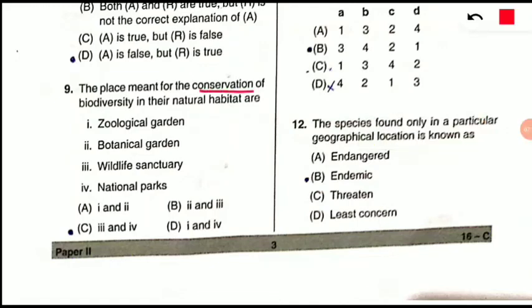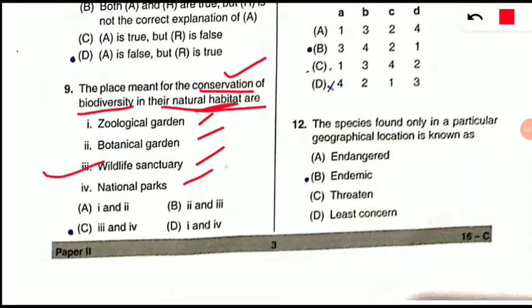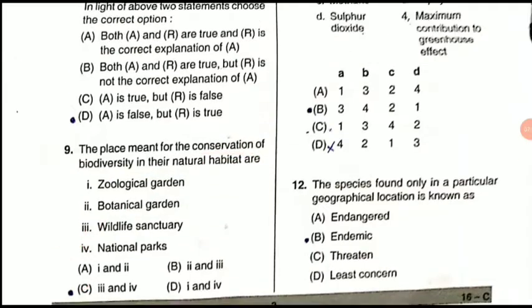Question 9: The places meant for conservation of biodiversity in the natural habitat are what? Options are zoological garden, botanical garden, wildlife sanctuary, and national parks. This asks about in-situ conservation — in the natural habitat. In-situ conservation includes only wildlife sanctuary and national park among the options. Botanical garden and zoological garden are ex-situ conservation. So options 3 and 4 are correct — option C is correct.